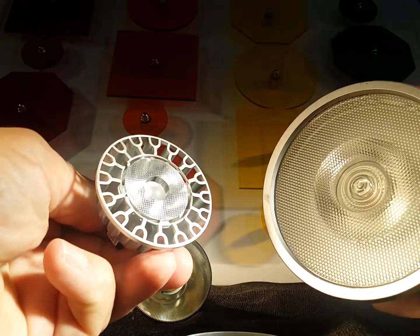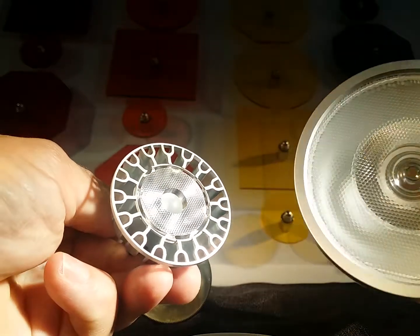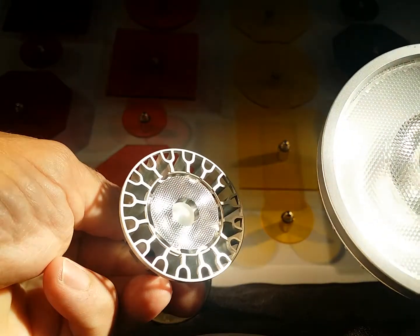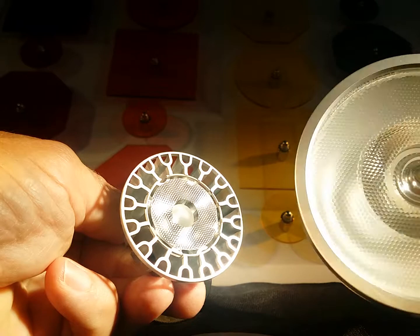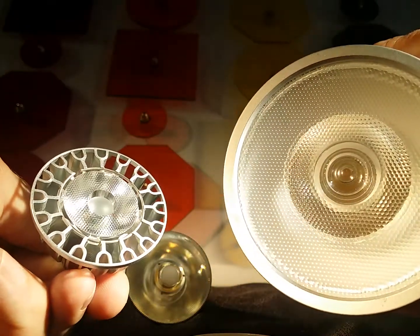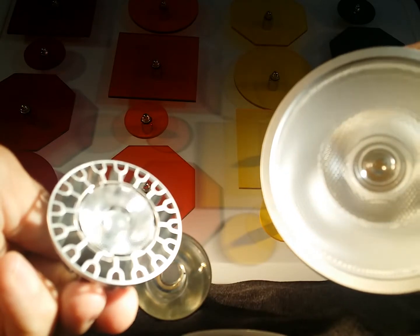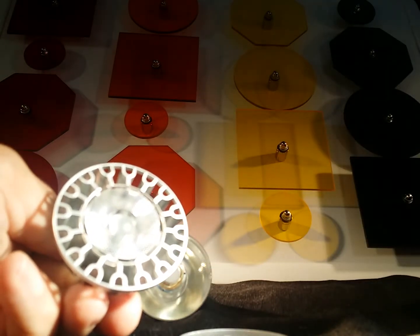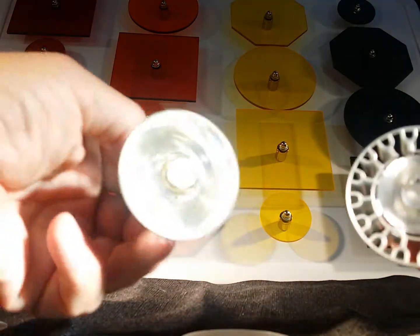Essentially what they are is they're fixed in their beam width and there's nothing more you can do with the lamp than what it is. It is what it is. But then they also invented a lamp called a snap-on LED lamp which has a magnet on the center of its face.